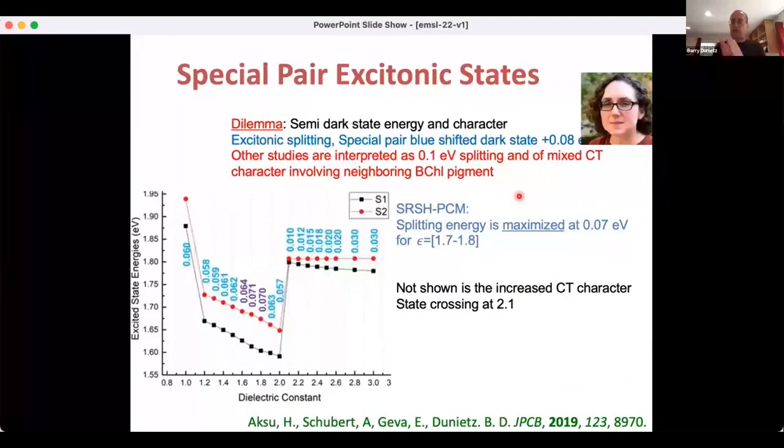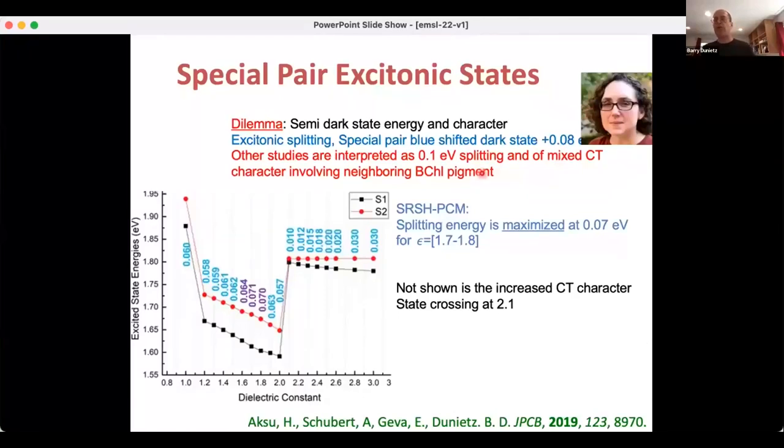Looking into these spectral peaks, we've considered the special pair itself. There's some discussion in the literature to understand the energies of the excitonic states. Some suggest that the splitting is a bit larger than interpreted by Professor Ogilvie's research, suggesting contributions by other pigments to the excitonic splitting. I should emphasize that the difficulty in assigning these peaks is because the blue-shifted state is semi-dark with some overlap with other spectral peaks. We're looking into the special pair excitonic state energies. You can see we can scan with our approach the dialectic constant as a parameter and find that at around 1.7 dialectic constant, that excitonic splitting is in good agreement with the one interpreted by Professor Ogilvie's group, providing some kind of confirmation to that interpretation.